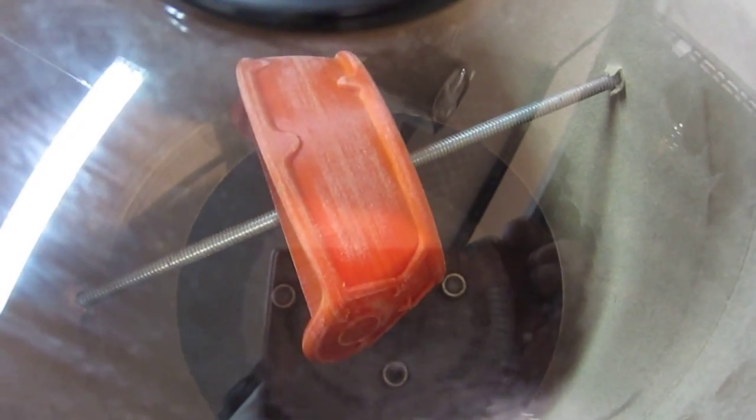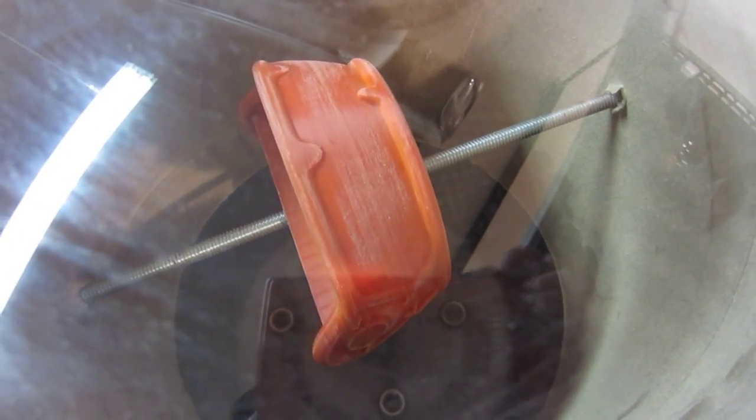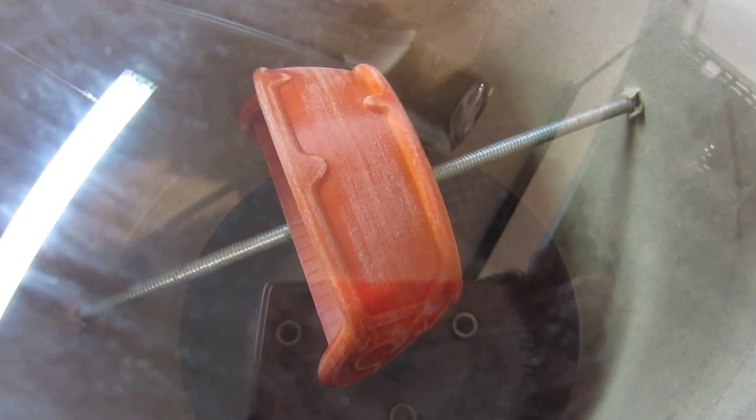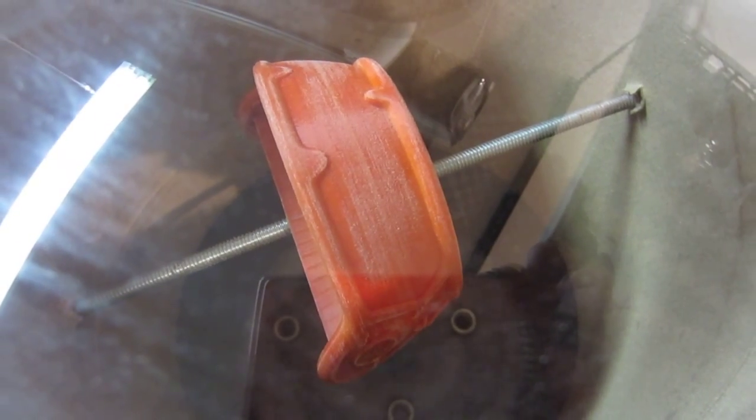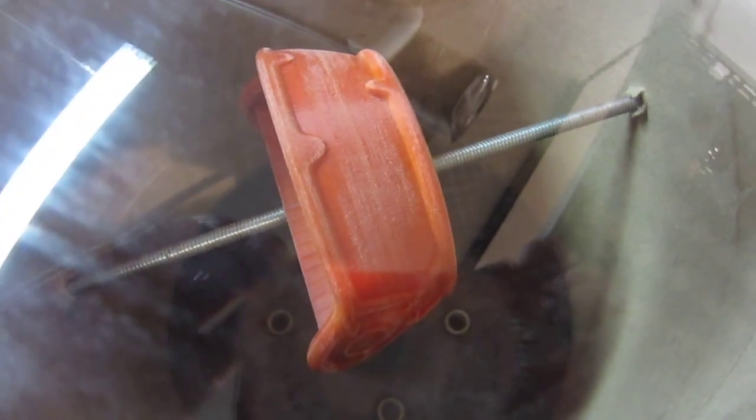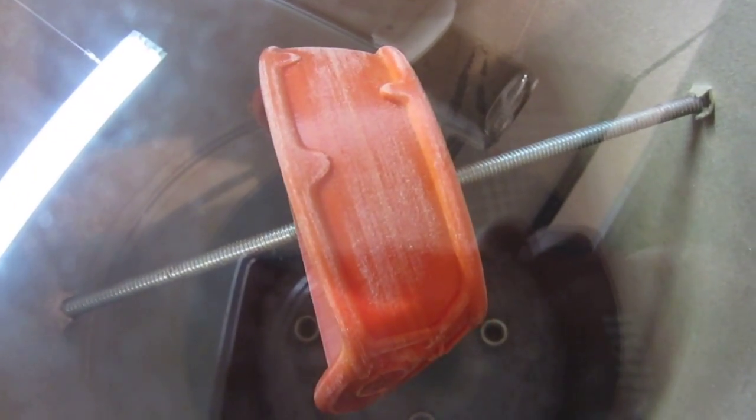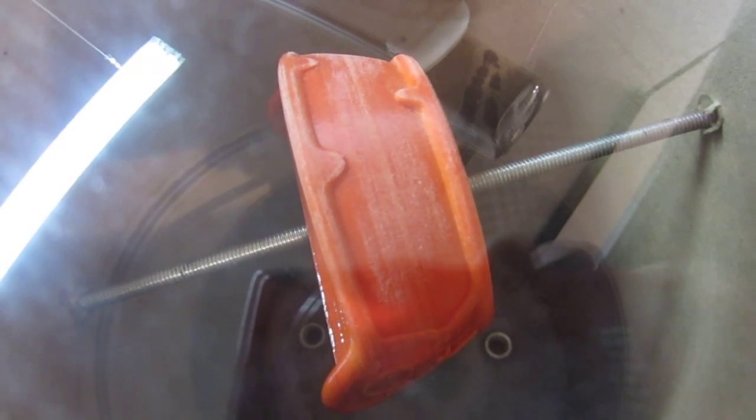So the acetone is already bubbling. And you should start seeing the ABS print start melting. There it goes.